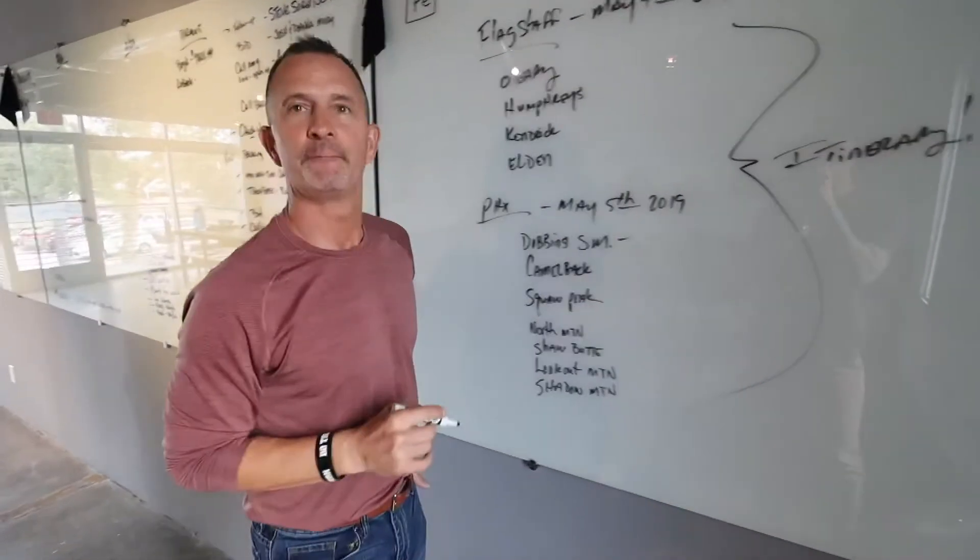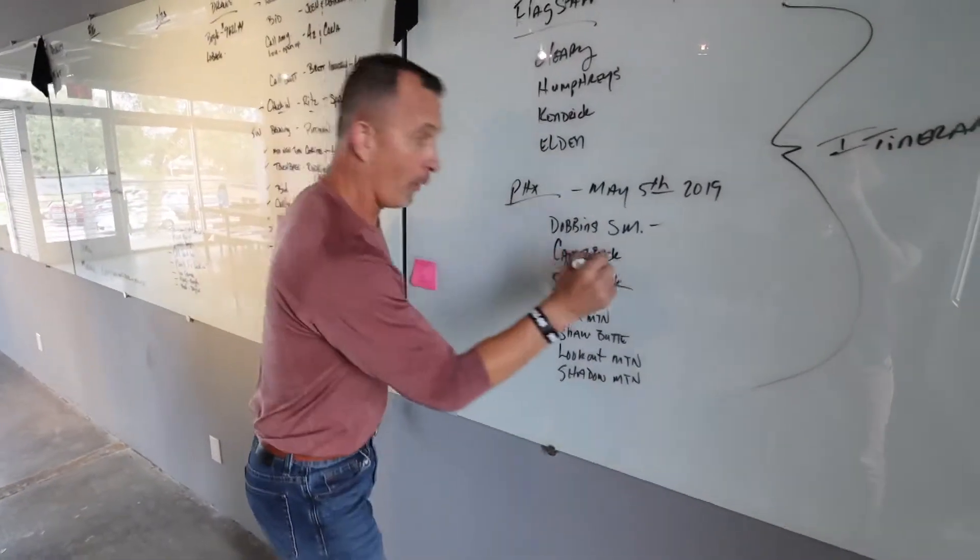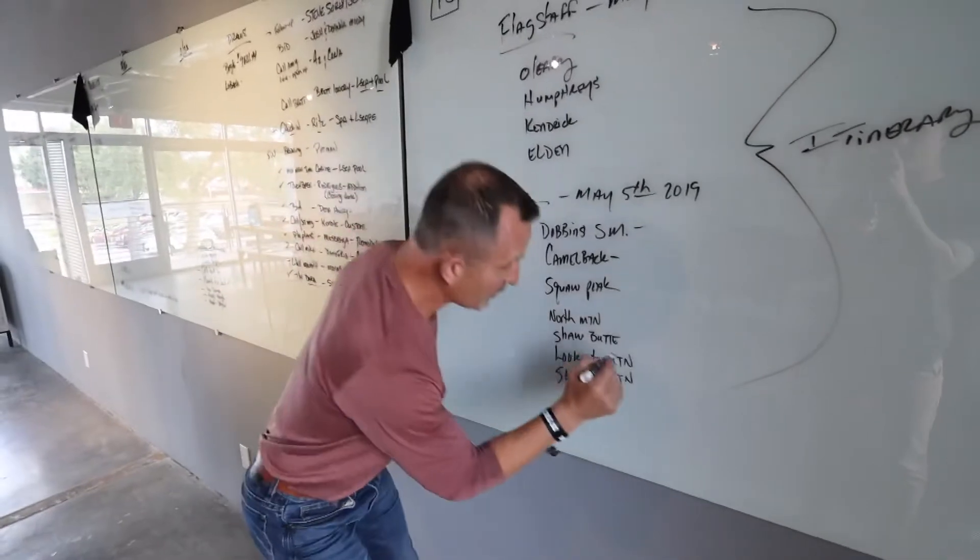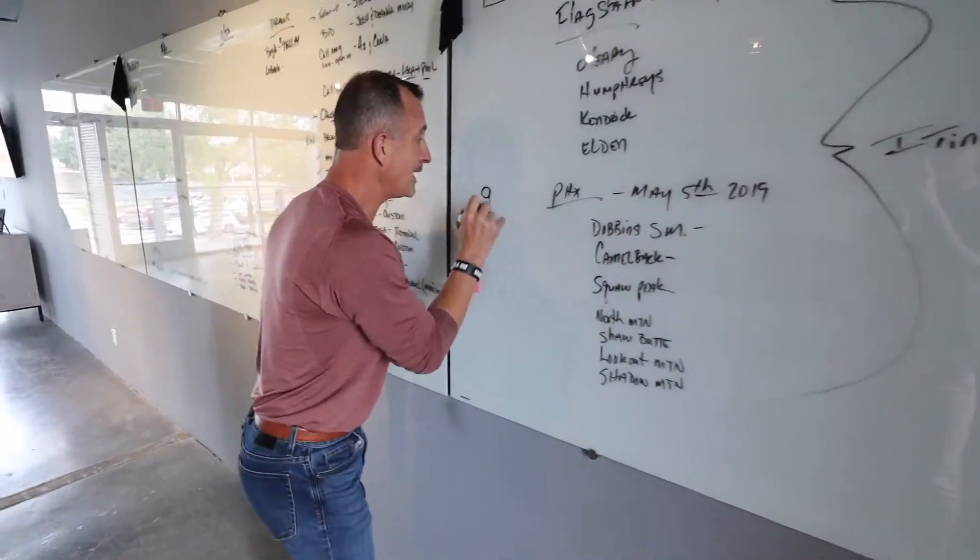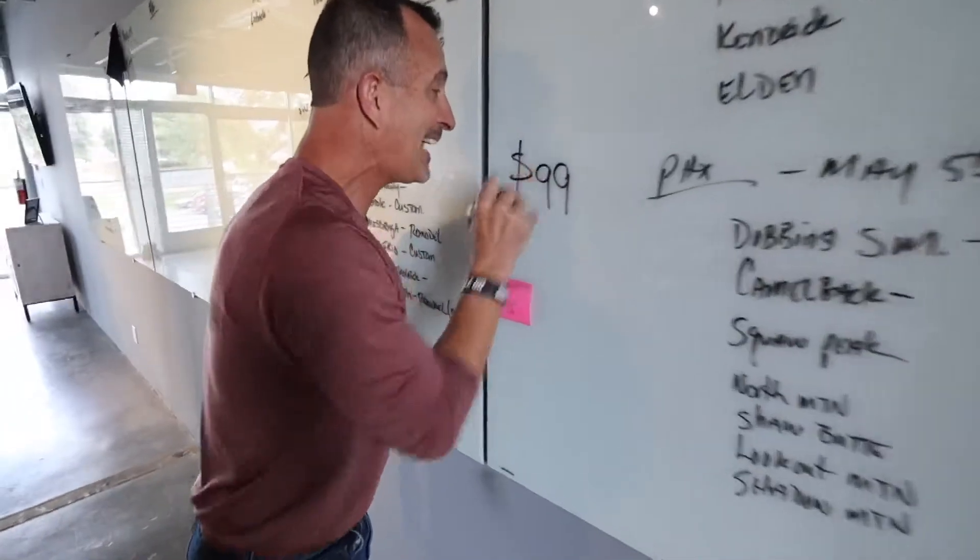And say you want to do one mountain, or two, or three, or say if you want to do all seven in Phoenix. And it's just you. It's only gonna cost you $99.